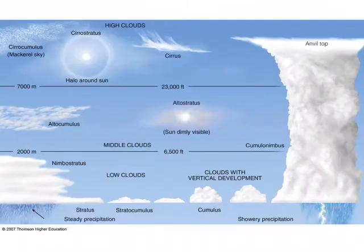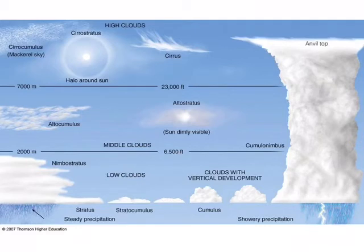Here's just another image of cloud types so you can see something a little different. Nimbostratus was not on the other cloud diagram. It is the cloud that produces steady rain. When we have a whole day of rain, those are usually nimbostratus clouds. Again, you can see there's 'nimbo' or 'nimbus,' which means rain forming.